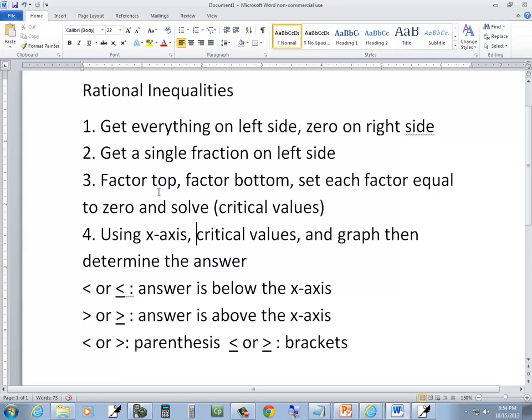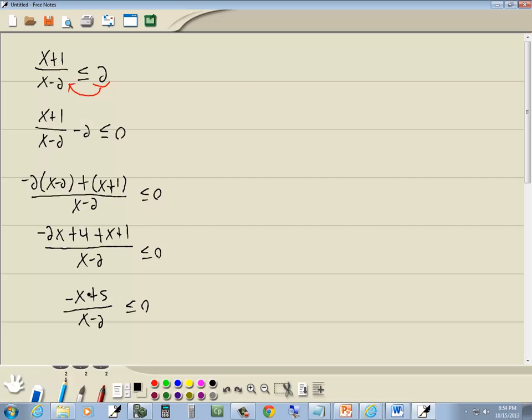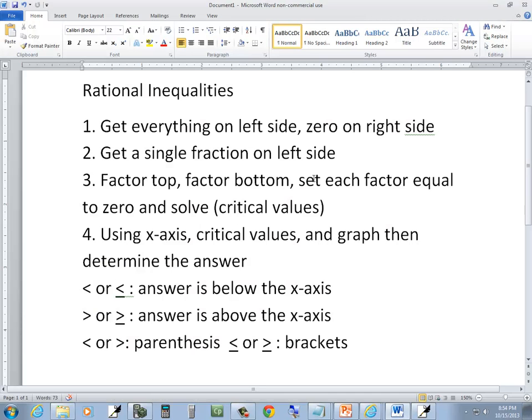Now, next step says to factor the top, factor the bottom. I could factor a negative 1 out of the top, but it wouldn't do me much good. So I'm going to go directly to setting each factor equal to 0 and solving. And those are our critical values.